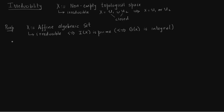Let us start in one direction. We start with X and assume it to be irreducible. Consider two polynomials F and G such that F times G belongs to the ideal I(X). In order to prove I(X) is prime, we have to show that either F or G lies in I(X).